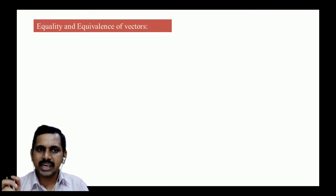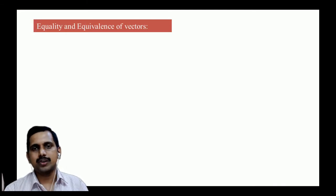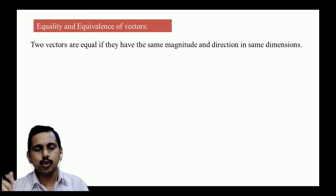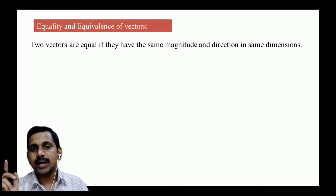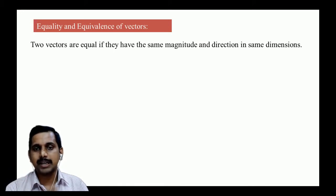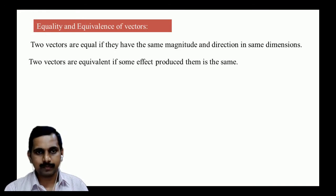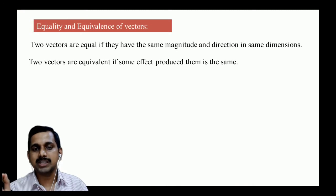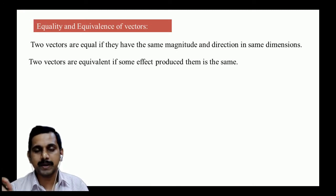Next, let us see equality and equivalence of vectors. Two vectors are equal if they have the same magnitude and direction in the same dimensions. Two vectors are equivalent if they produce the same effect.